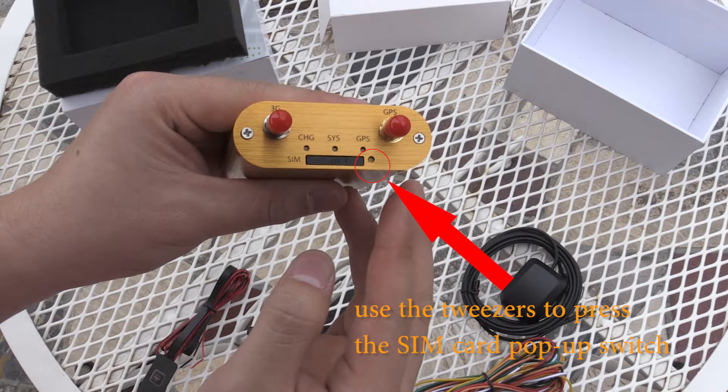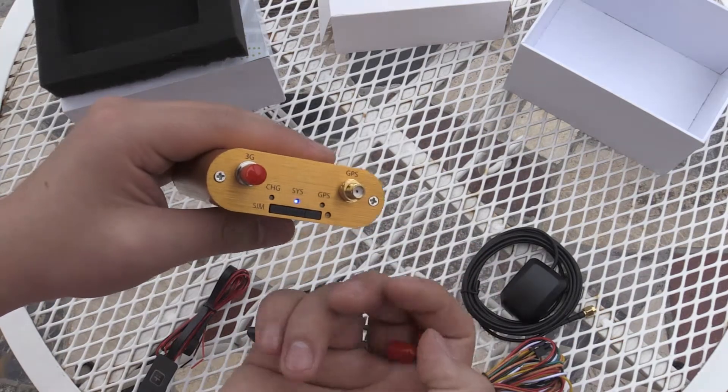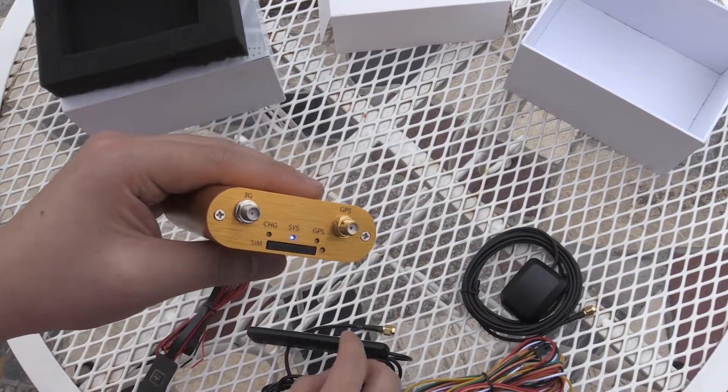If you want to take out the SIM card, use the tweezers to press the SIM card pop-up switch. The SIM card slot will pop up.